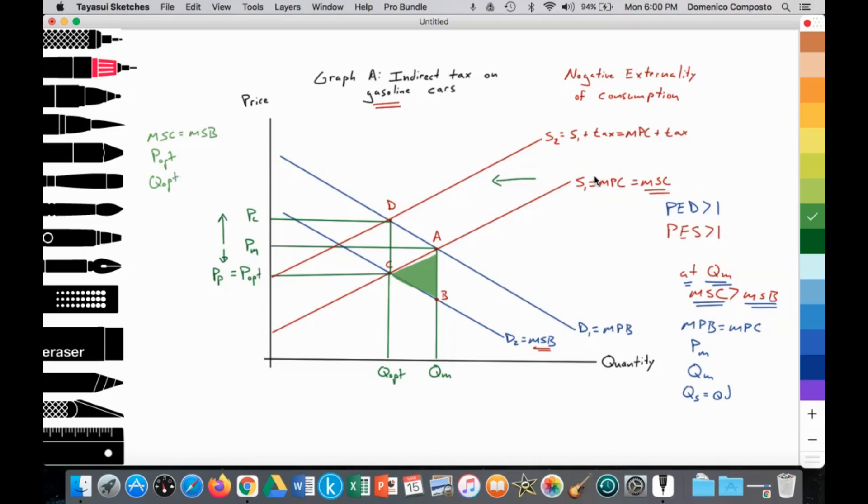The government intervenes and they decide to apply a per-unit tax. So we're looking at a potential solution to achieve the social optimum level of output, and that is the application of an indirect tax. So there's a tax applied to each unit or each car produced by the firm. And as a result, that has the effect of shifting the supply curve inwards from S1 to S2, shifting it in by the amount of the tax. So S2 equals S1 plus tax, which is equal to the MPC curve plus tax.